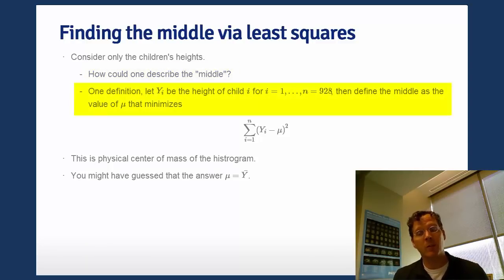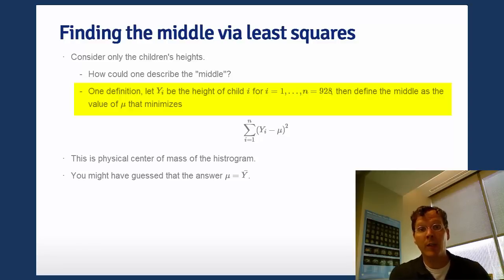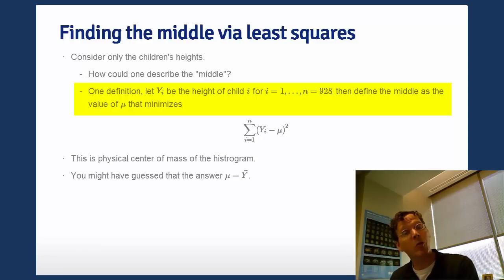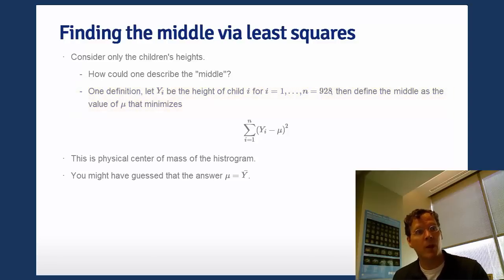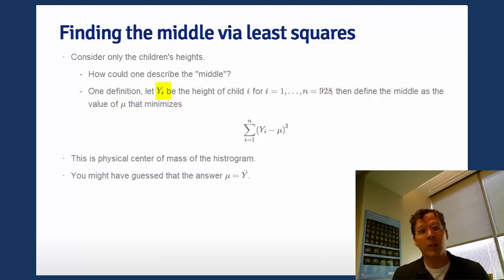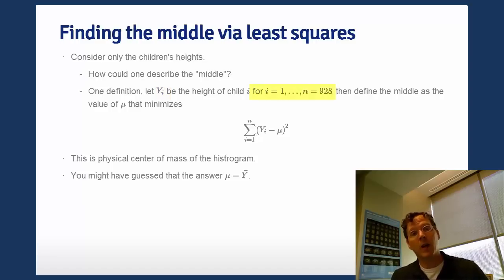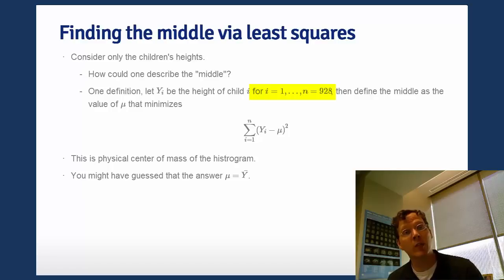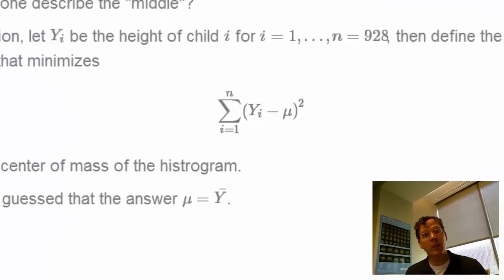I'll go through a little bit of the notational mathematics, and if that isn't your thing then wait just a minute and we'll go through a sort of physical experiment to explain it visually. For the mathematics: let y_i be the height for child i, where y_1 is the height for child 1, y_2 is the height for child 2, and so on. My index i goes from 1 to n, with n being 928 children in this particular data set.